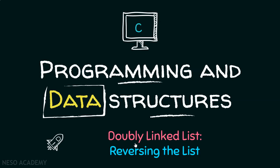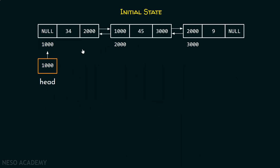In this presentation, we will learn how to reverse the complete doubly linked list. Suppose this is the initial state of the doubly linked list. Currently these are the elements of these nodes, and the head pointer is pointing to the first node.